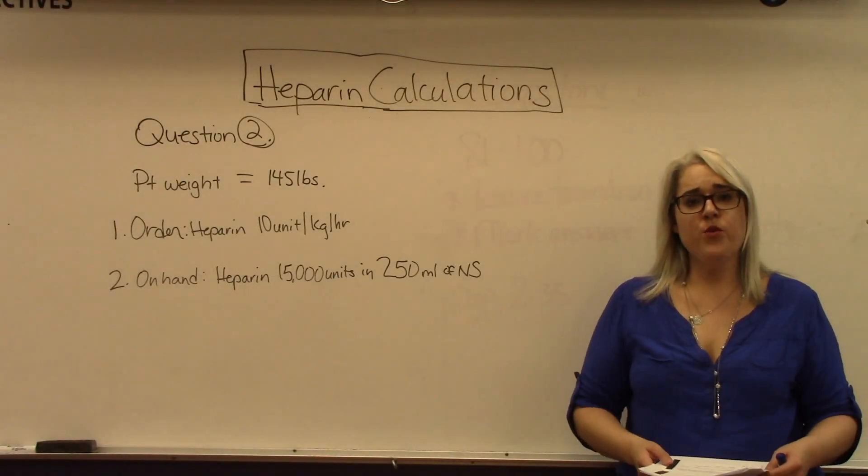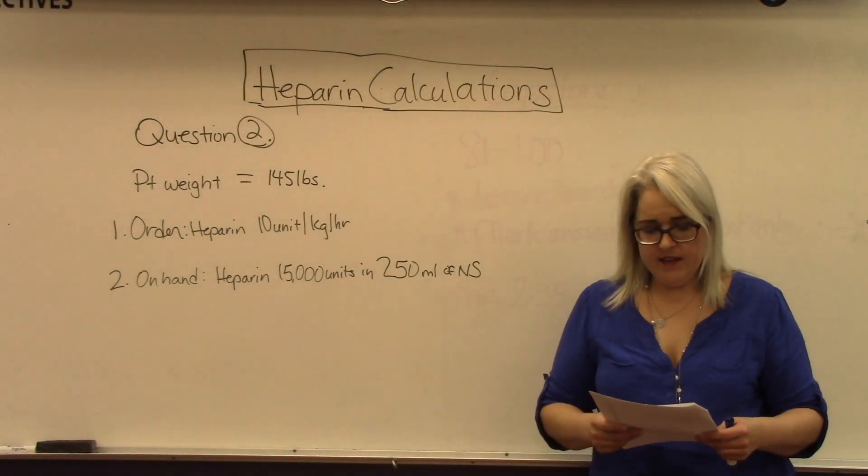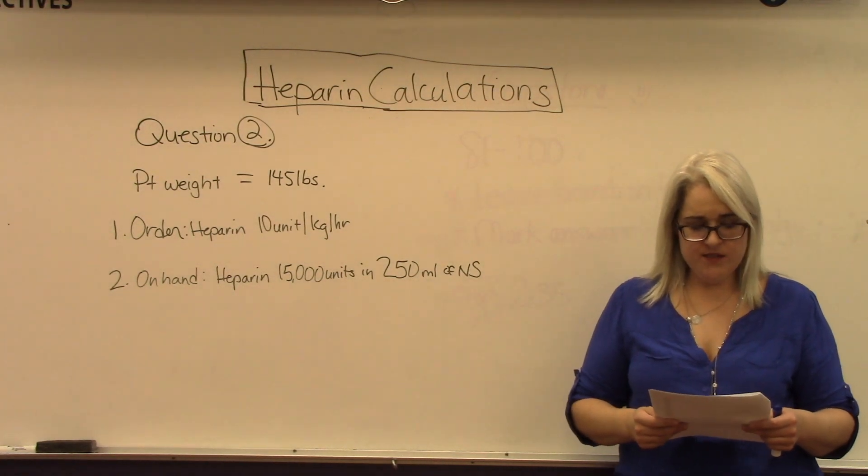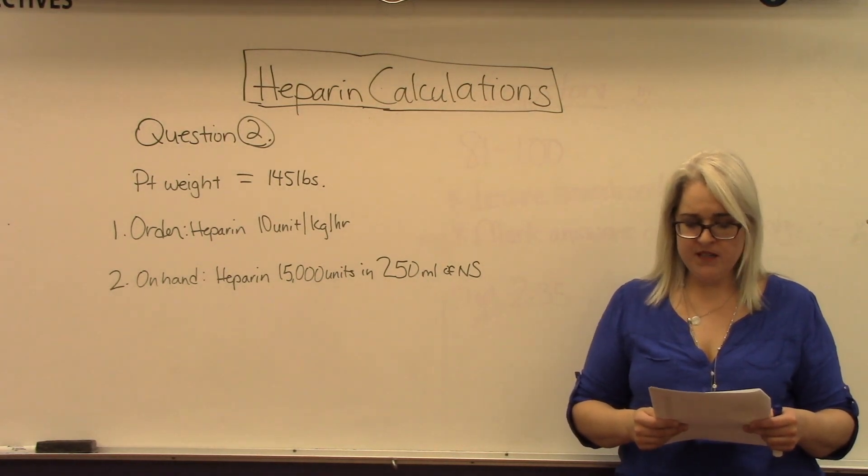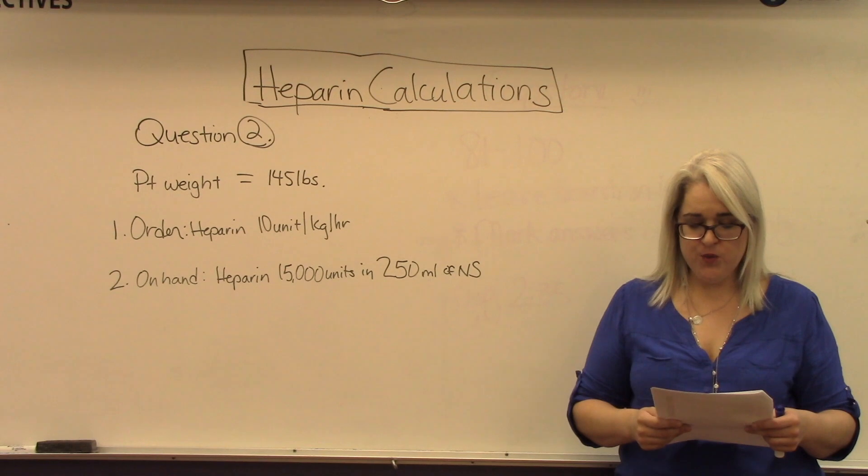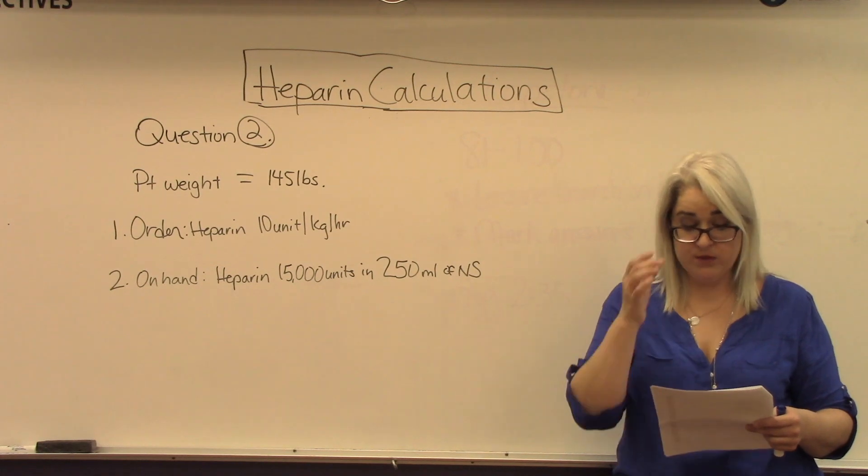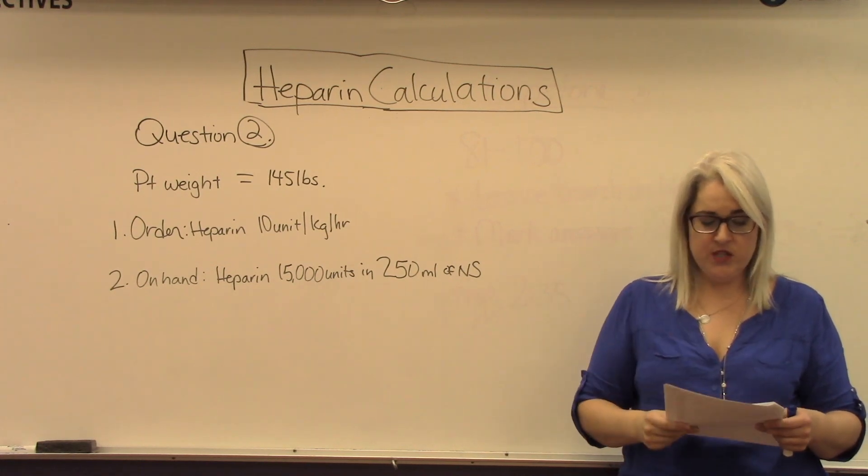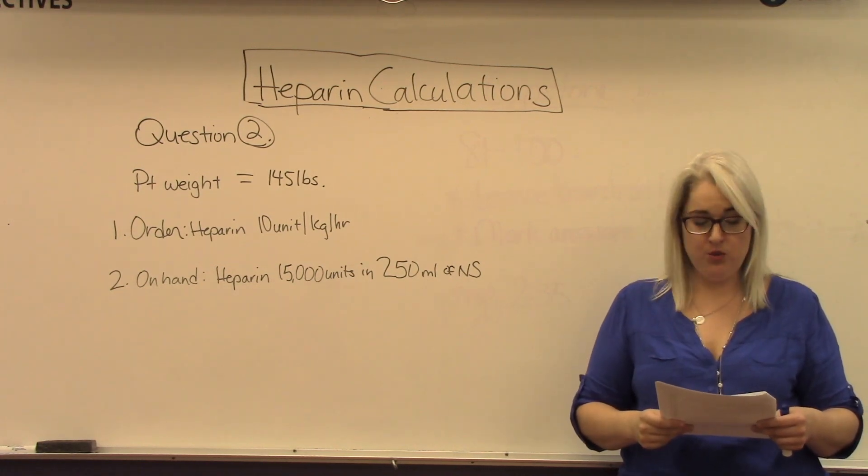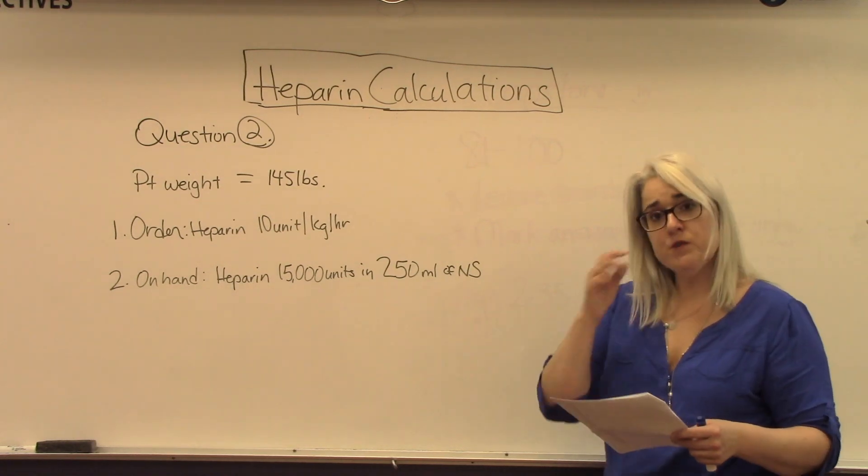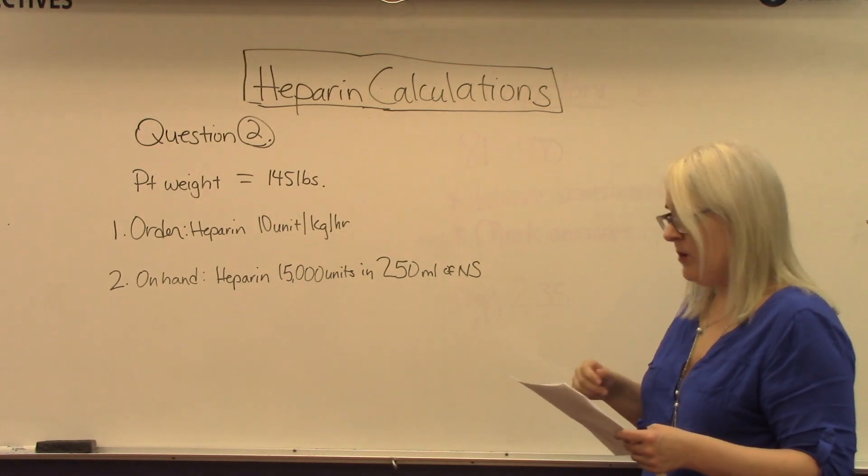Moving along, this is question number two. Calculate the heparin maintenance infusion rate in units per hour and milliliters per hour for a patient weighing 145 pounds. The instructions state to round kilograms to a whole number.